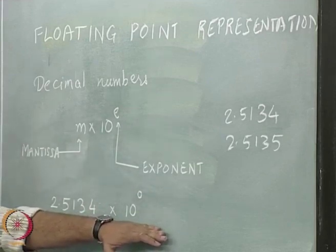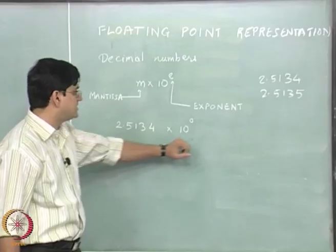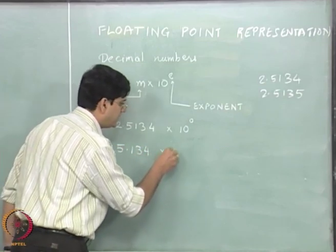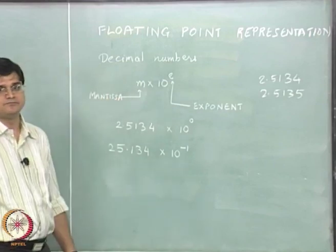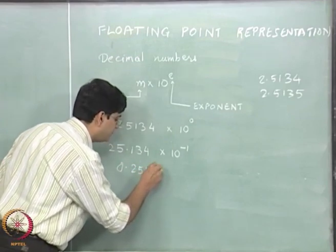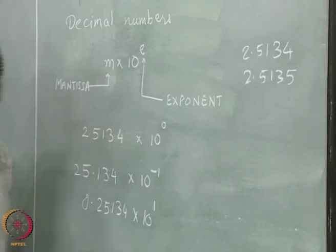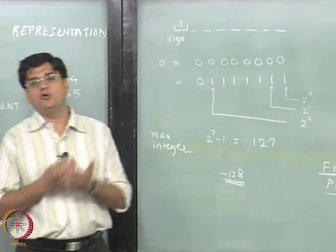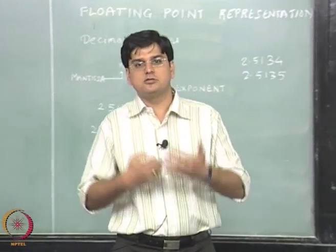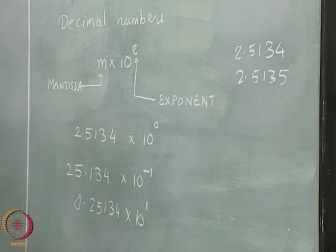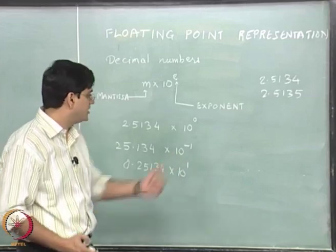This particular number is 2.5134. We can also represent this number as 25.134 multiplied by 10 to the power minus 1. We can also represent this as 0.25134 multiplied by 10 to the power 1. The question is, which of these representations is correct? When we are talking about doing things by humans, all these representations mean one and the same thing — you can interchangeably use any of these representations.